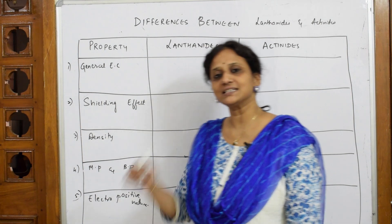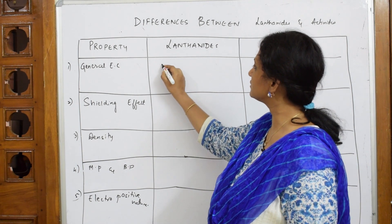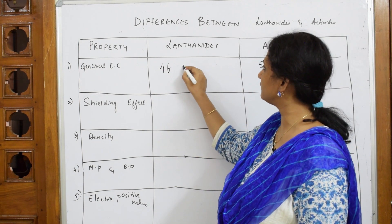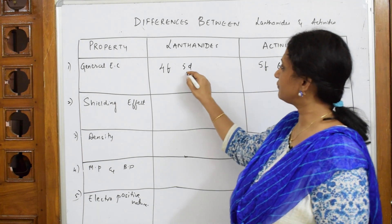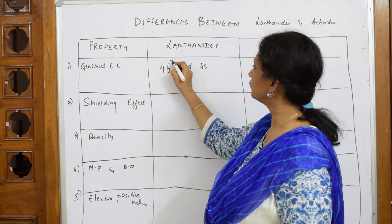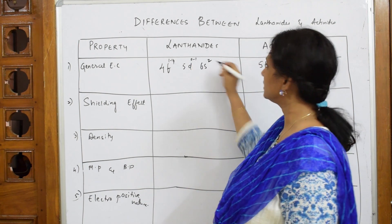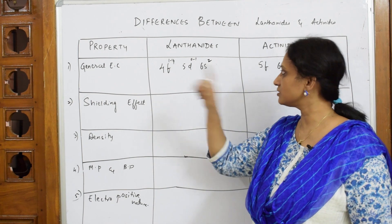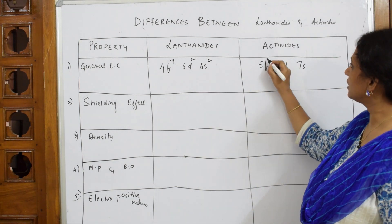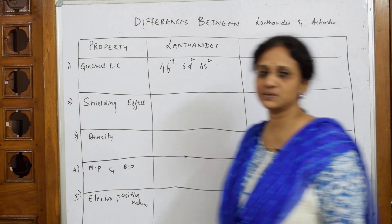When writing the general electronic configuration of Lanthanides and Actinides, the incoming electron enters the F orbital. For Lanthanides, the electron enters 4F, followed by 5D and 6S. For Actinides, it enters 5F, followed by 6D and 7S. The F subshell fills from 1 to 14, D ranges from 0 to 1, and S holds 2 electrons. The general configuration is written as (n-2)F¹⁻¹⁴, (n-1)D⁰⁻¹, nS².